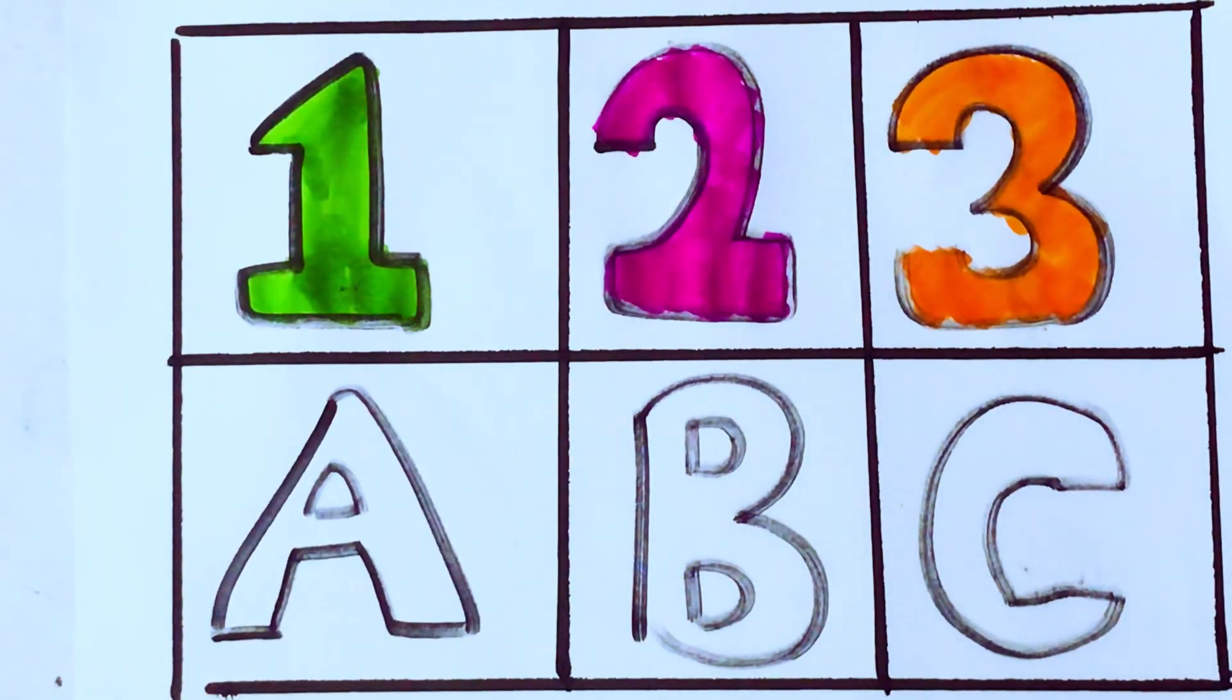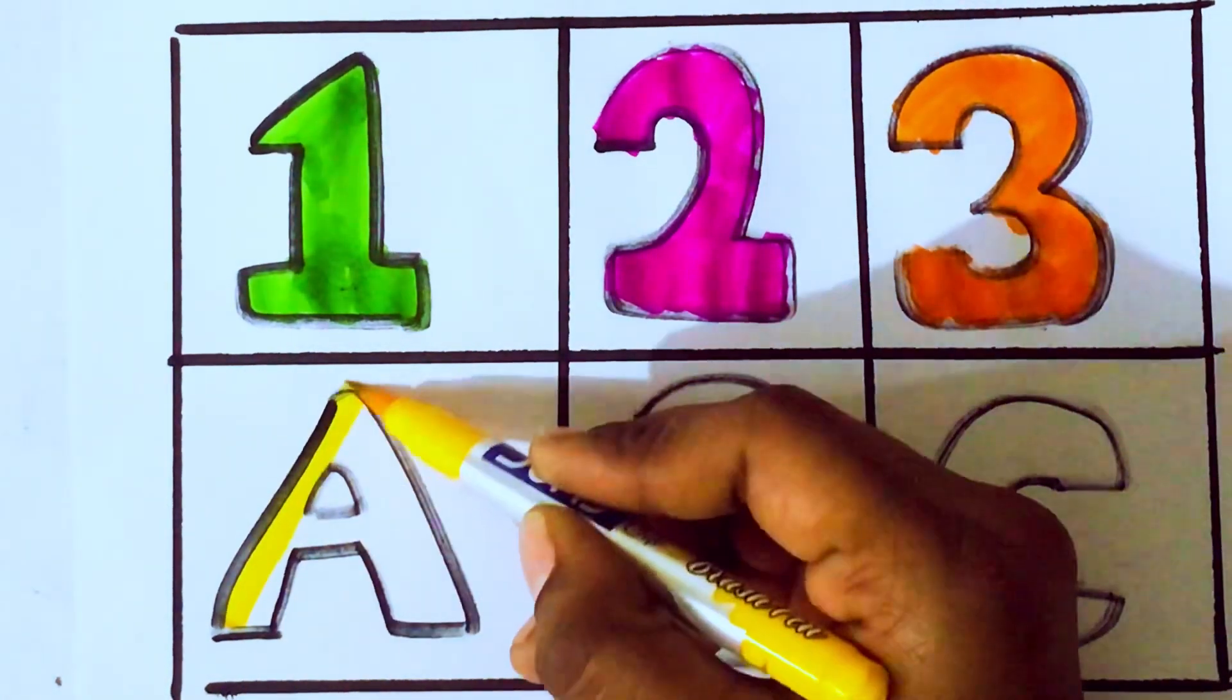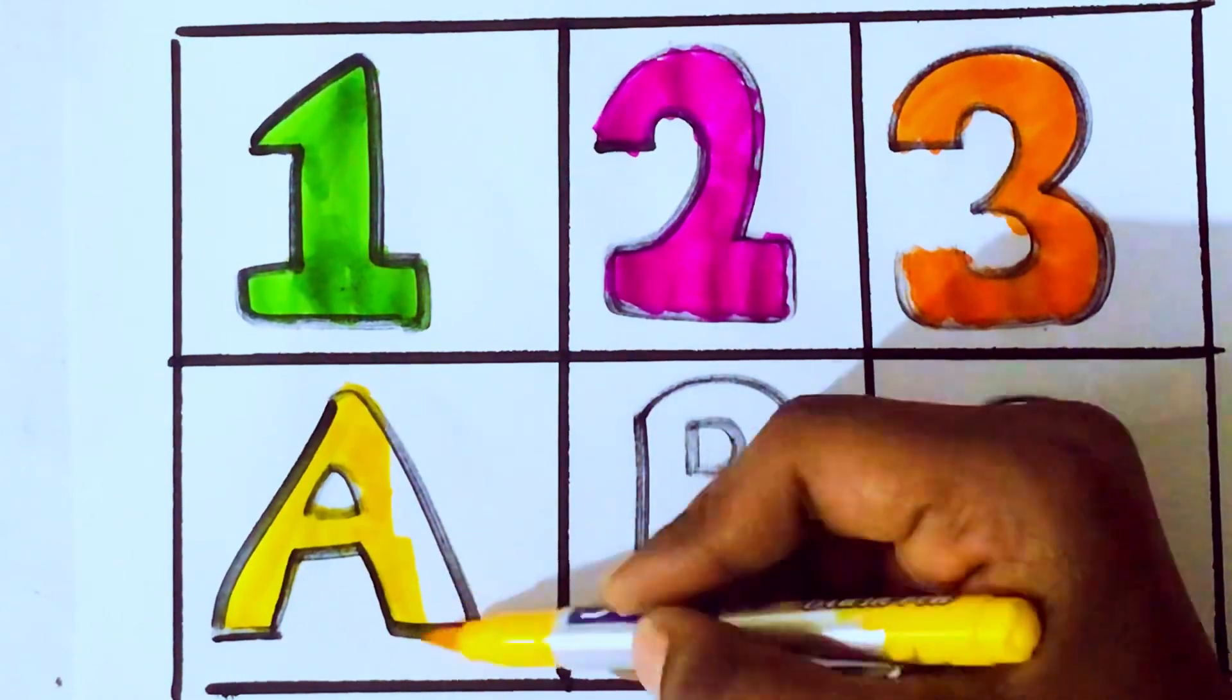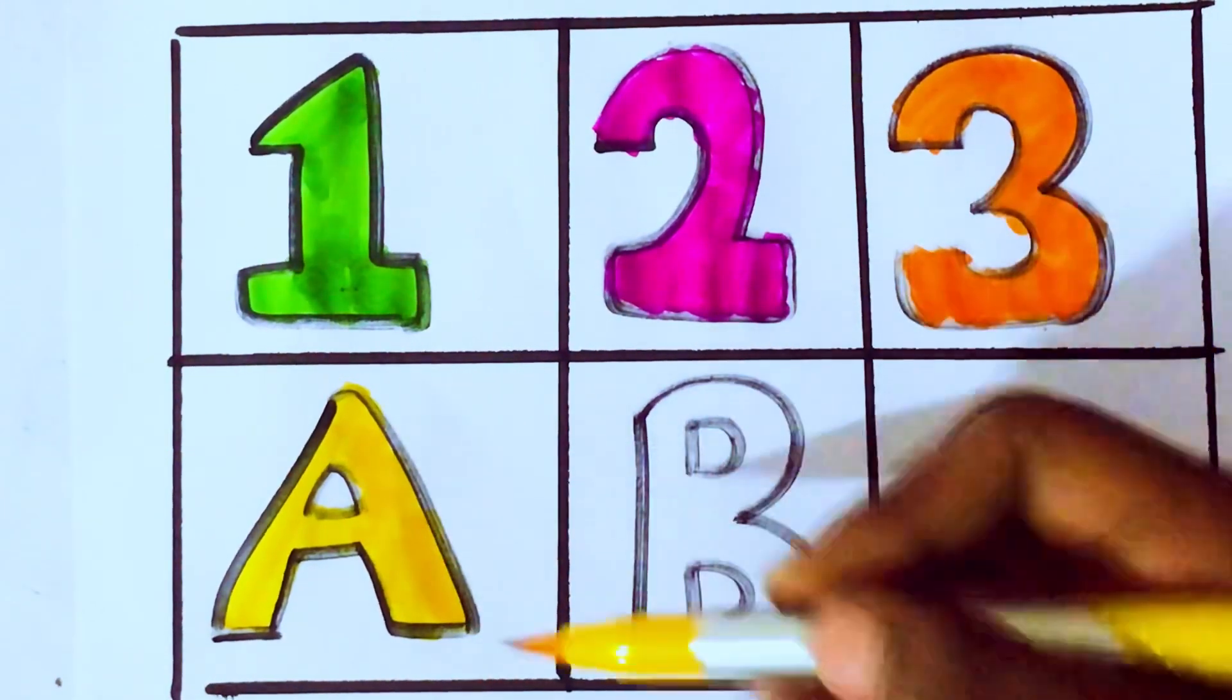Next, alphabets. Yellow color. A for Apple. A for Apple. A, P, P, L, E, Apple.